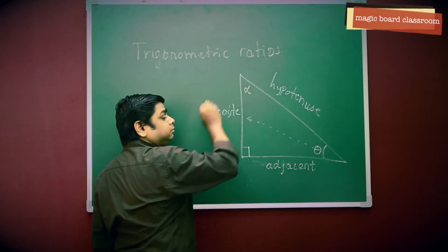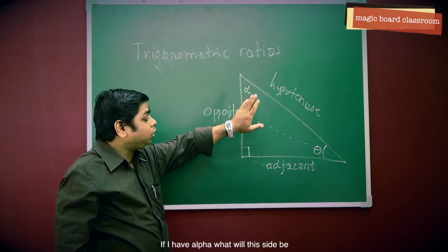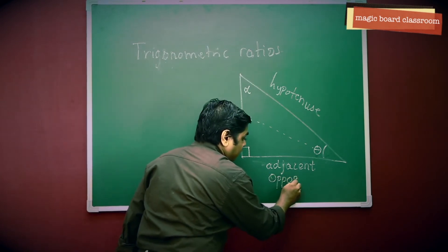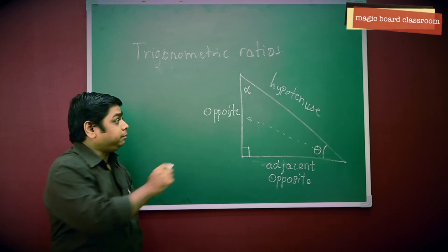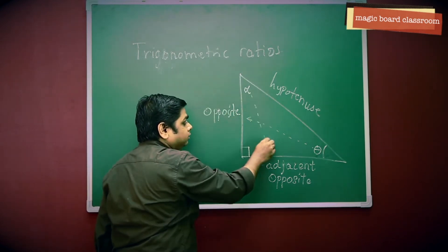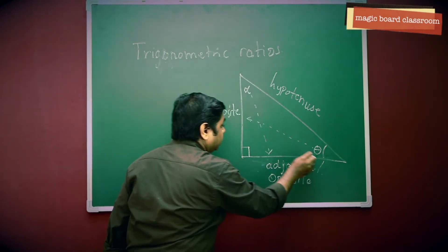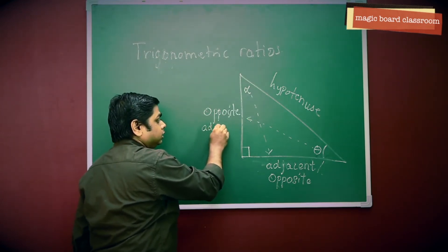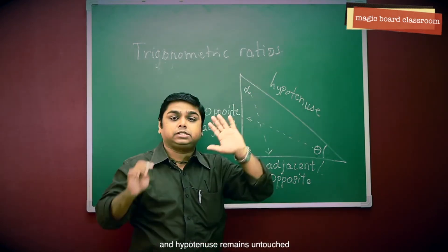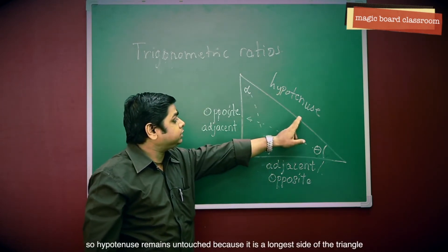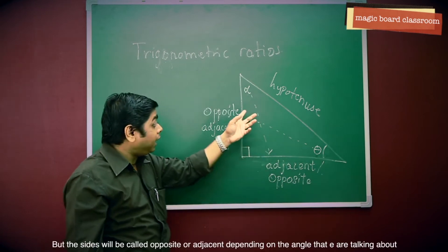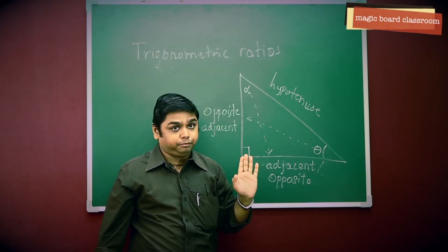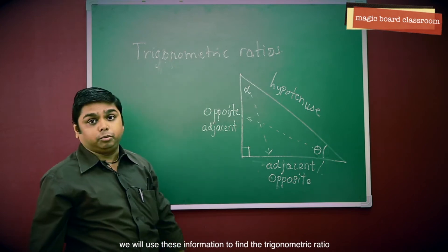Let me give you another example. If I consider this angle as alpha, what will this side be? This side is going to become opposite, because this side is opposite of alpha. Similarly, this side will become adjacent. And the hypotenuse remains untouched because it is the longest side of the triangle. So the opposite and adjacent sides will be called so depending on the angle we are talking about.